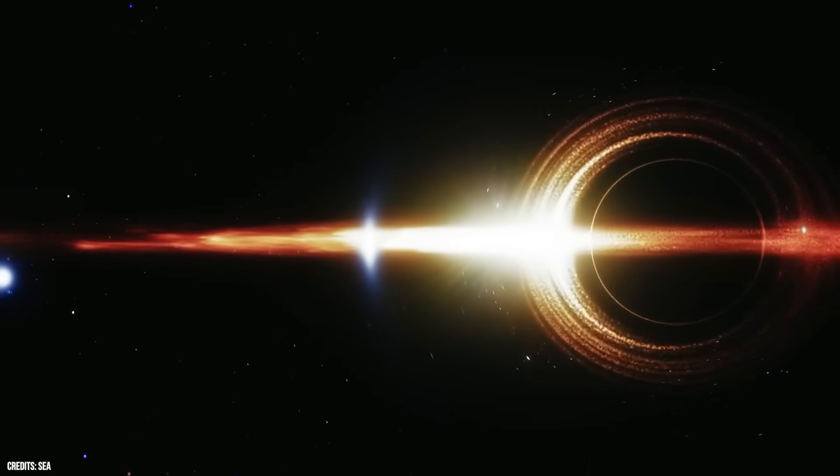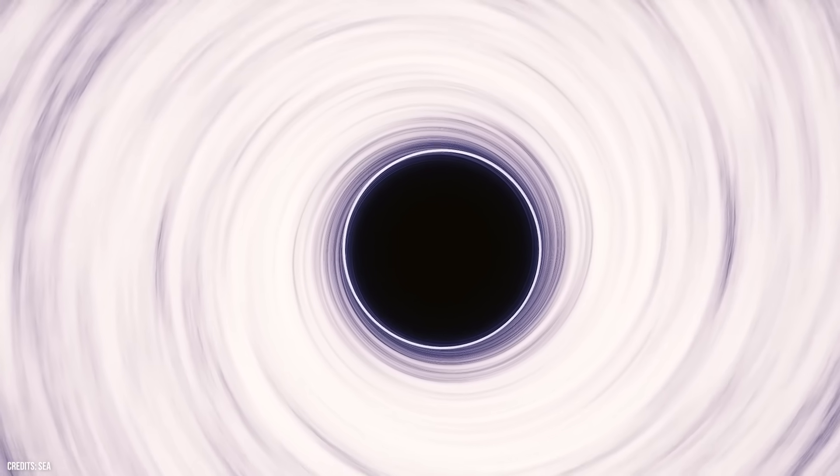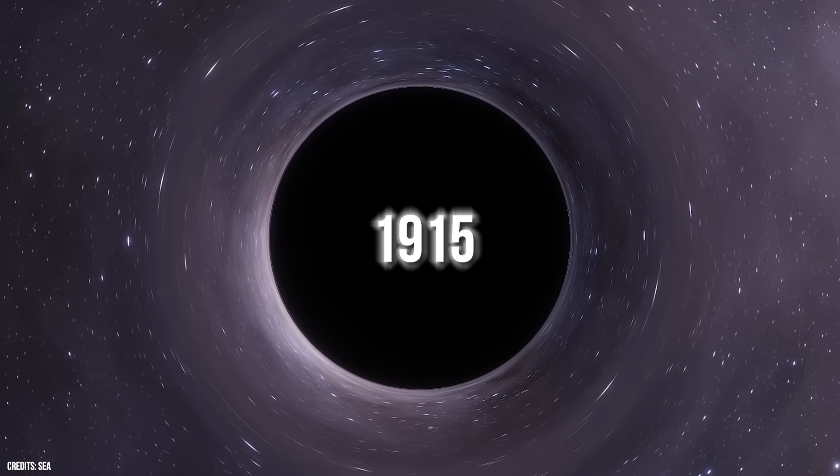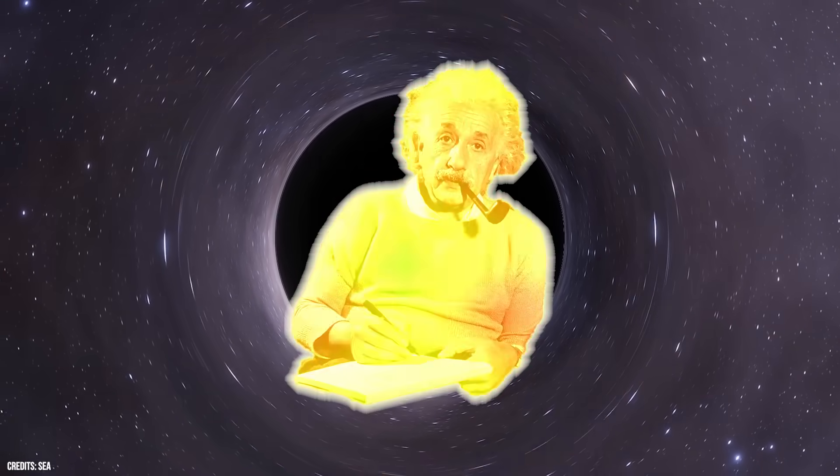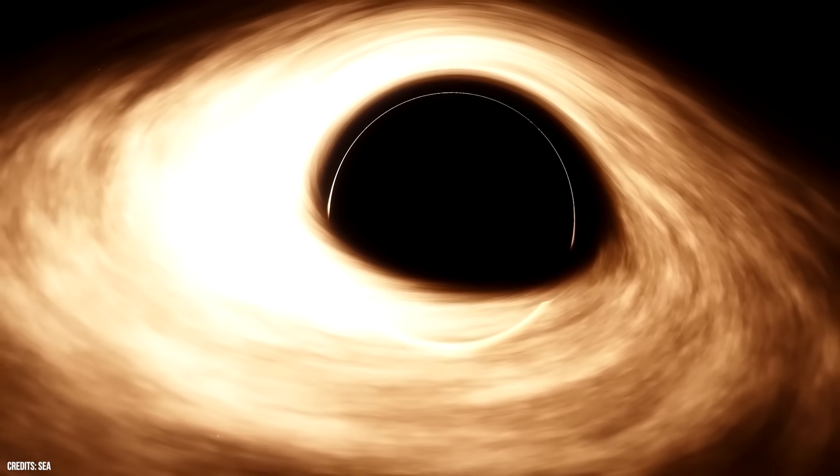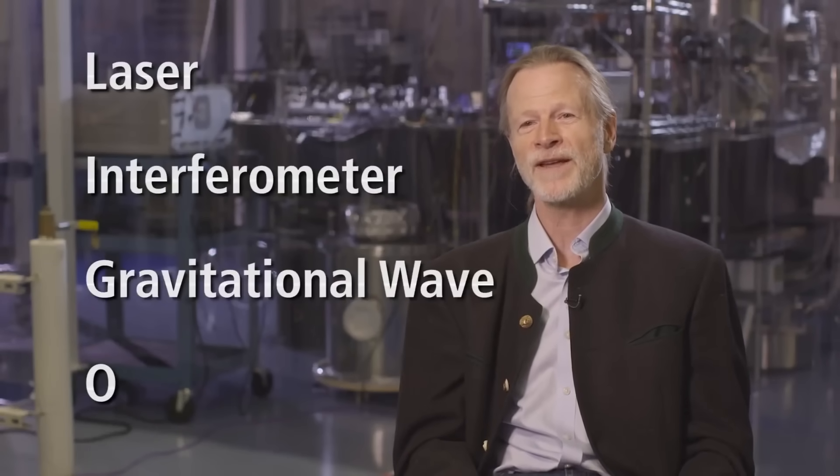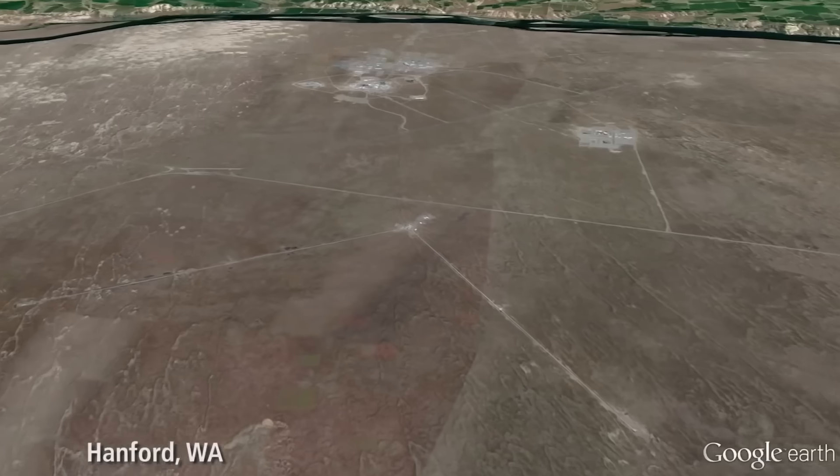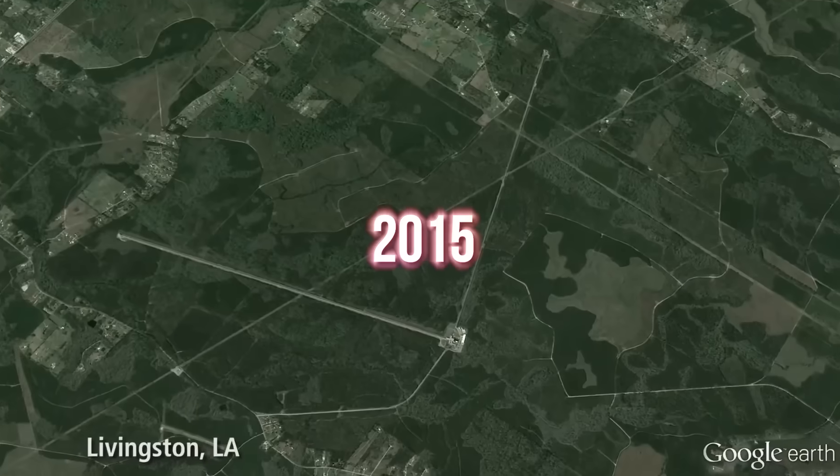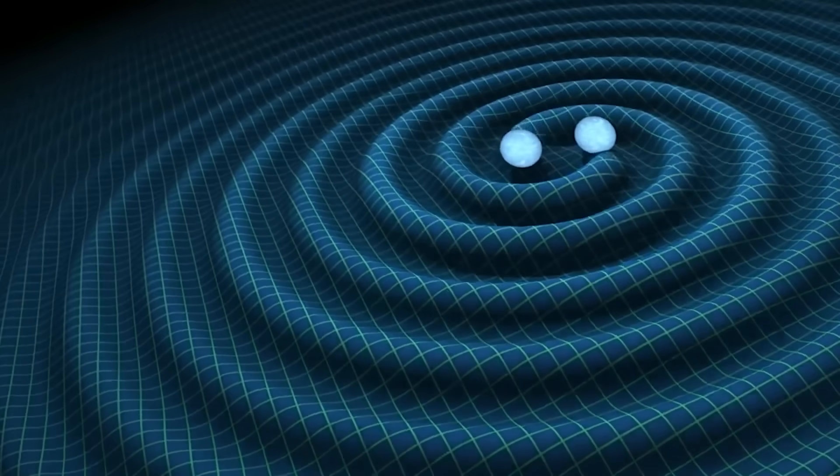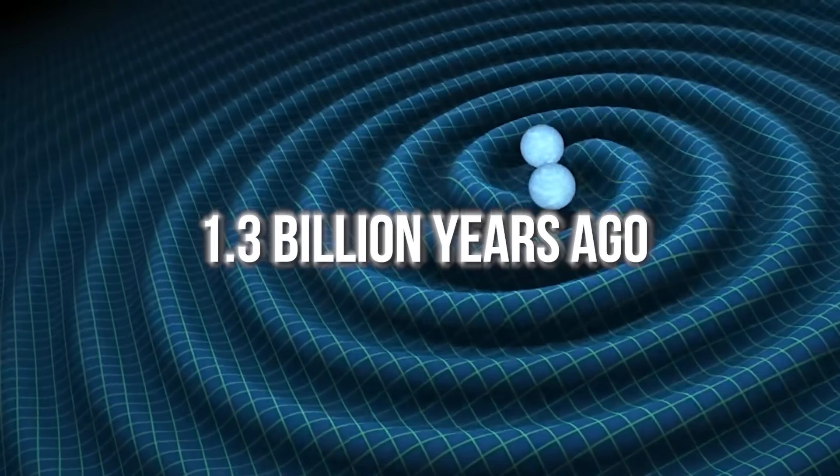Due to their incredibly strong gravitational force, black holes cannot be directly observed, since no light can escape their grasp. Instead of traditional telescopes, scientists employ massive radio telescopes and gravitational wave detectors to study them. In 1915, Albert Einstein proposed the idea that objects moving through space generate waves in the fabric of space-time, which combines the concepts of space and time, similar to ripples on a pond. Researchers at the Laser Interferometer Gravitational Wave Observatory, LIGO, detected gravitational waves for the first time in 2015. This monumental discovery resulted from the collision of two black holes approximately 1.3 billion years ago.